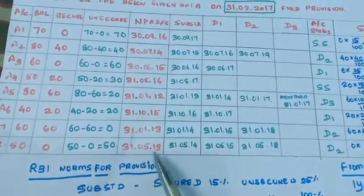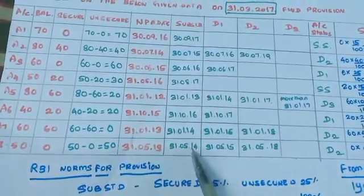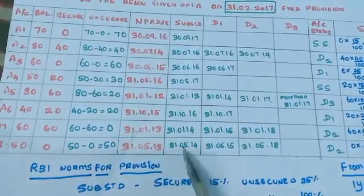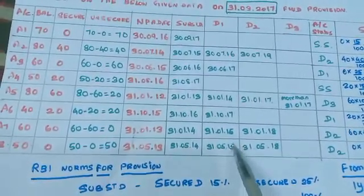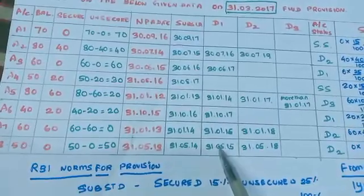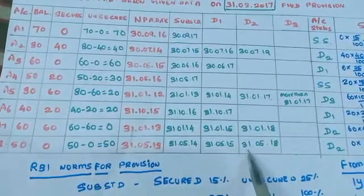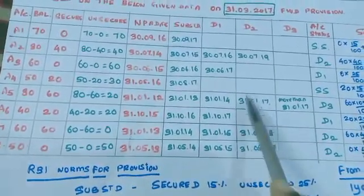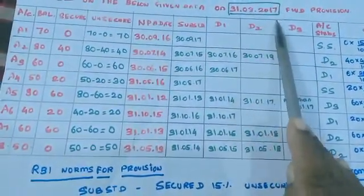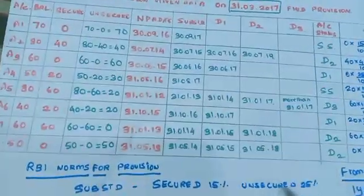The NPA date for A8 is 31-5-13. Up to 2014 this account is in substandard category, up to 2015 it is in D1 category. For 2016, 2017, and 2018 — 3 years — it is in D2 category. So our date 31-3-17 falls under D2 category.